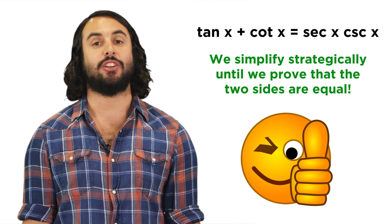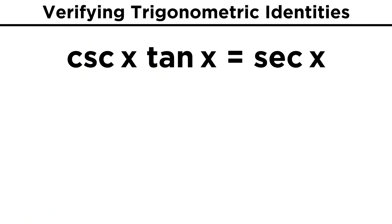Let's start with a simple one, and you'll see what I mean. What if we have cosecant x times tangent x equals secant x? What can we do to prove that this is true?